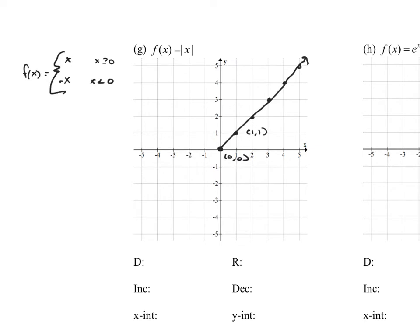The question then becomes what does it look like if we have negative numbers. Think about plugging in negative 1 — it's a negative number, so it sends out the opposite, the positive version. If I plug in negative 1, I get positive 1. Negative 2 gives positive 2. Negative 3 gives positive 3. Negative 4 gives positive 4. Negative 5 gives positive 5. That's what the left side of this function looks like — that V-shape.